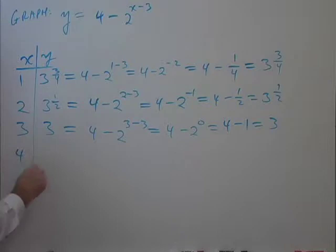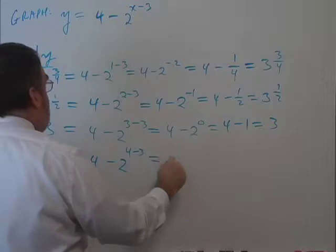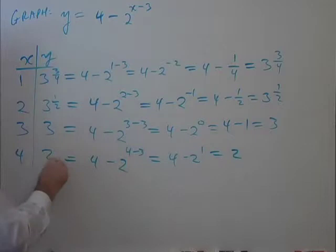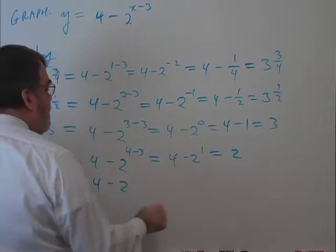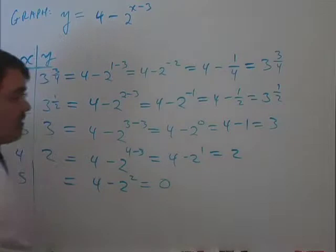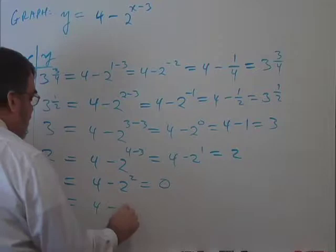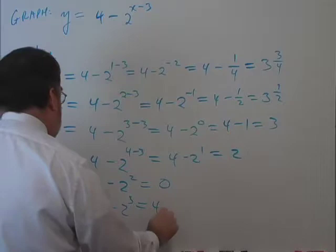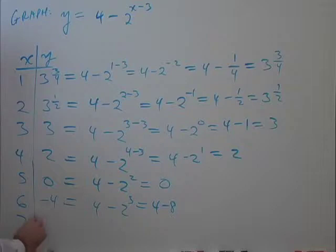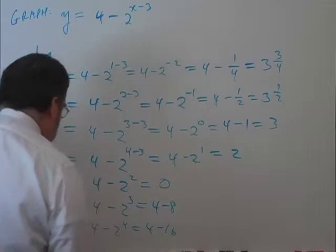And 4 would be 4 minus 2 to the 4 minus 3. 4 minus 2 to the first is 2. 5 will be 4 minus 2 to the, it'll be 2 to the second power, which is 4, so 4 minus 4 is 0. I'm going to plug in 6. I've got 4 minus 2 to the third, which is 4 minus 8, which is negative 4. And let's do one more. 7 will be 4 minus 2 to the fourth. 4 minus 16 is negative 12.